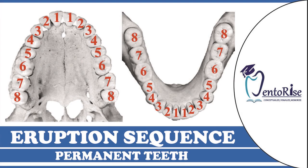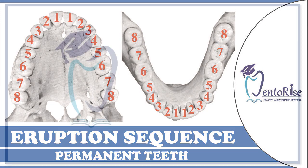In our video on chronology of permanent teeth, we dealt in detail about the age of eruption of different permanent teeth into the oral cavity. In this video, we will be dealing with the sequence in which the mandibular and the maxillary teeth erupt. Watch the video till the end to understand it well.